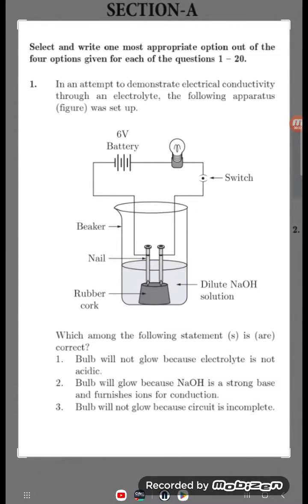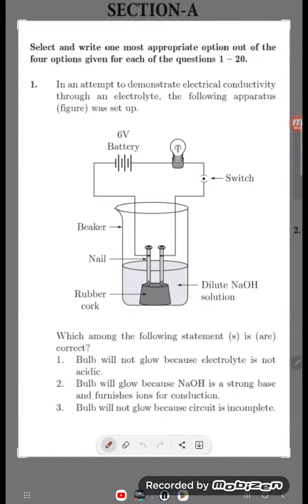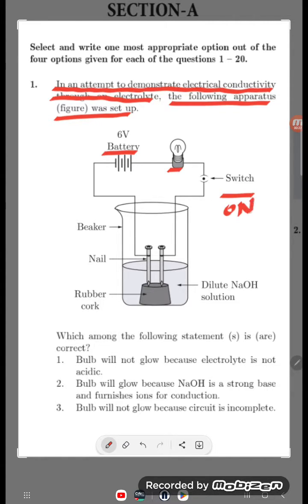Hello students, let's try to understand one problem. In an attempt to demonstrate electrical conductivity through an electrolyte, the following apparatus was set up. You can see the apparatus here: battery is there, then bulb is there, switch is on - this is the on condition.